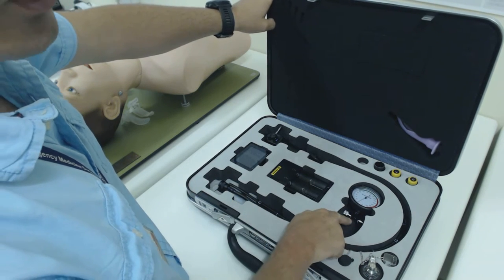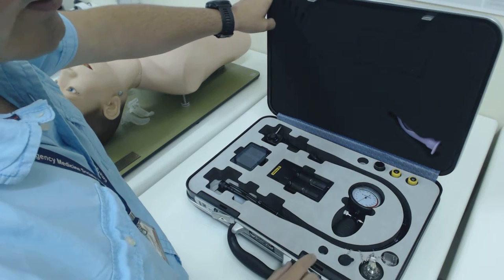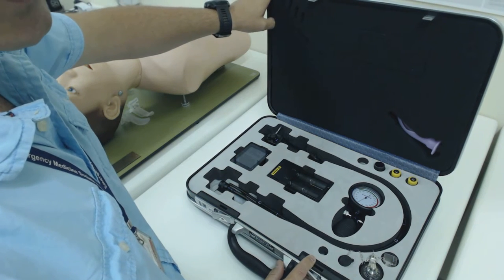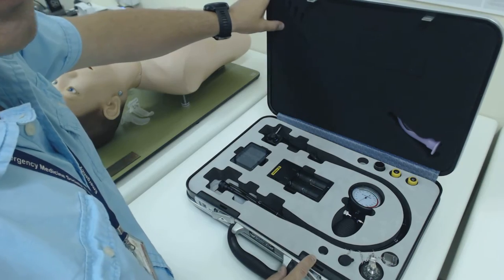You'll also notice that there's a pressure manometer and a seal which protects the scope during cleaning and allows us to do pressure tests before we operate it.